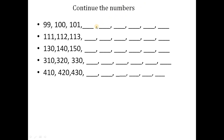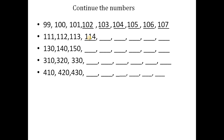Next: continue the numbers — write numbers in the gaps. Here: 99, 100, 101. One step counting. After 109, the next number is 110. Continuing: 102, 103, 104. Next sequence: 111, 112, then jumping to 130, 140. And: 115, 116, 117, 118, 119.